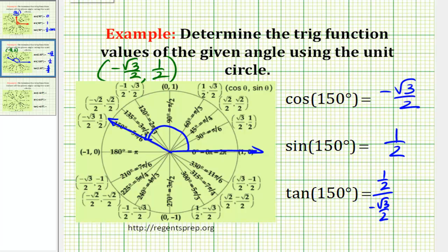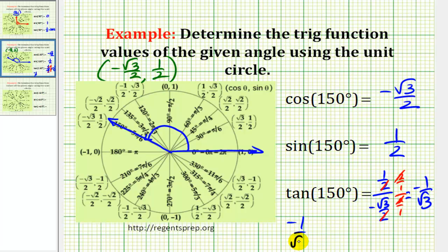We can multiply both the numerator and denominator by two. The twos simplify out, leaving us with negative one over square root three. Rationalizing that gives us negative square root three over three.